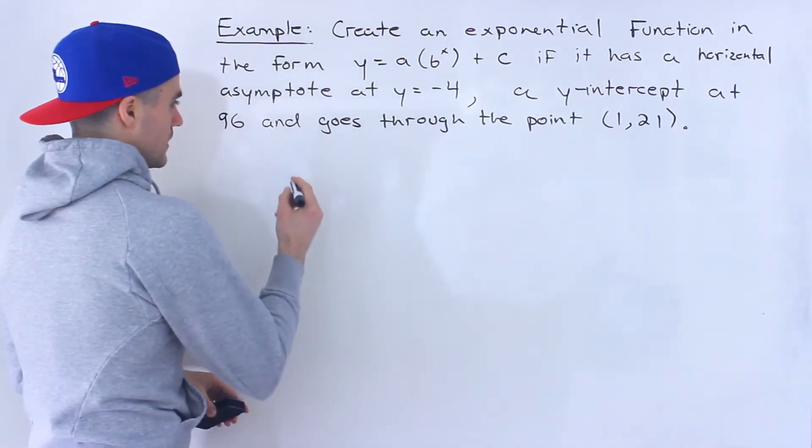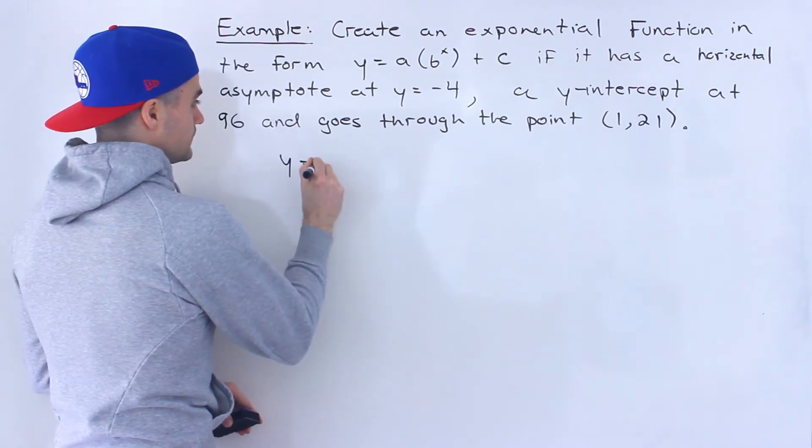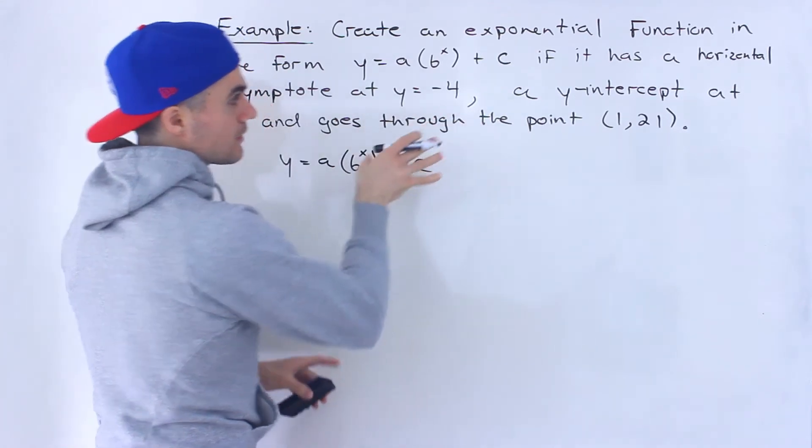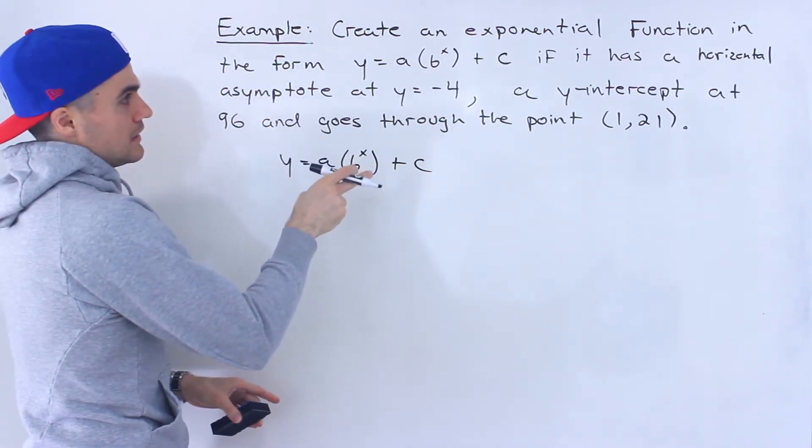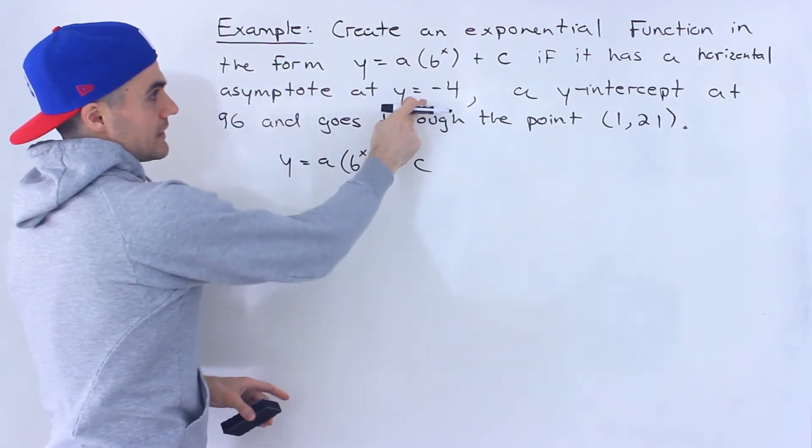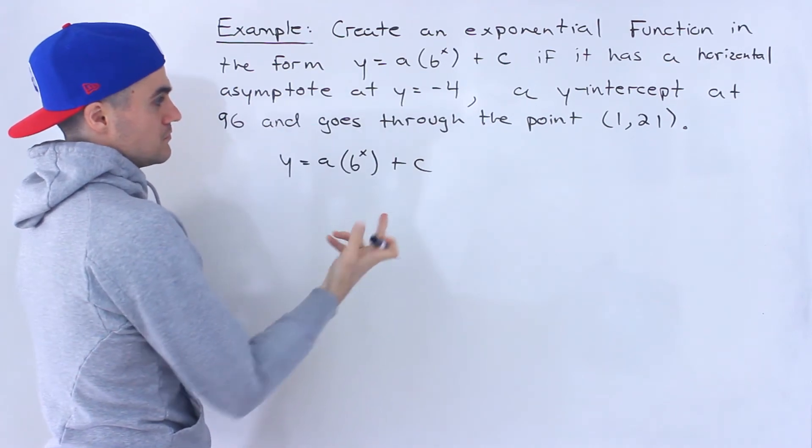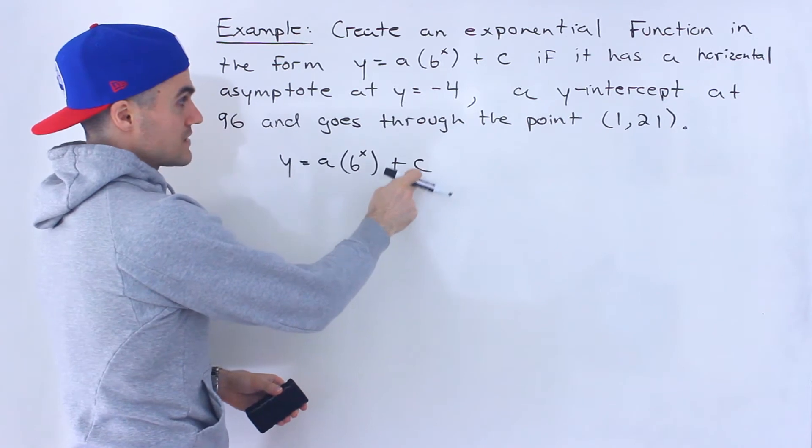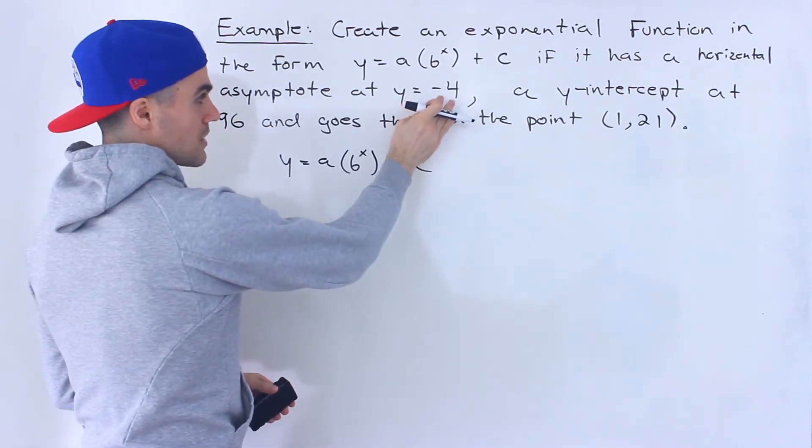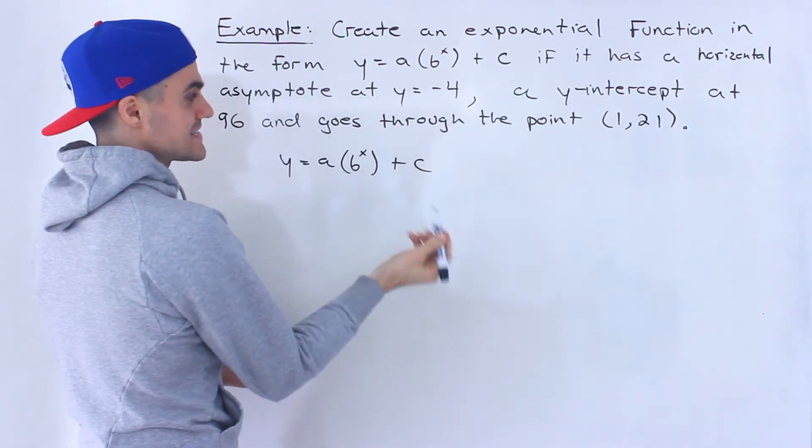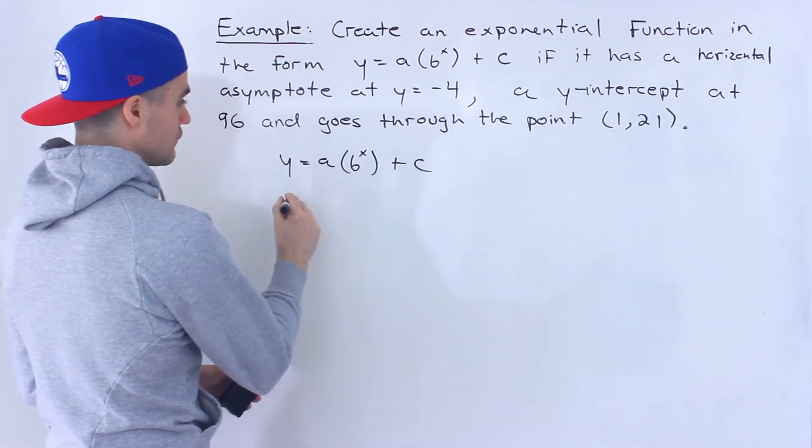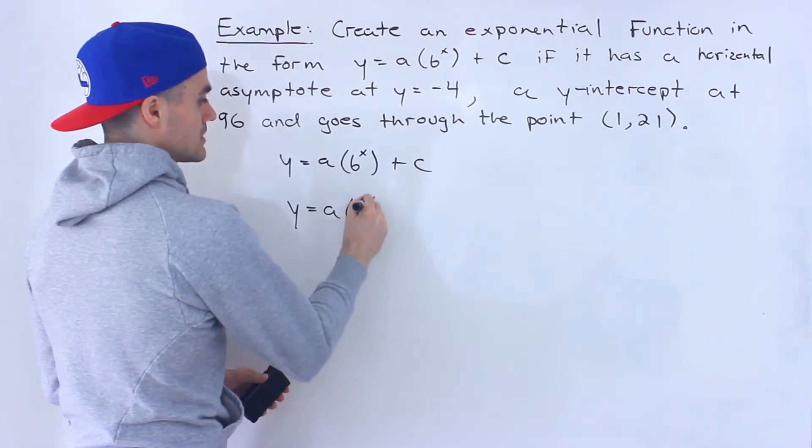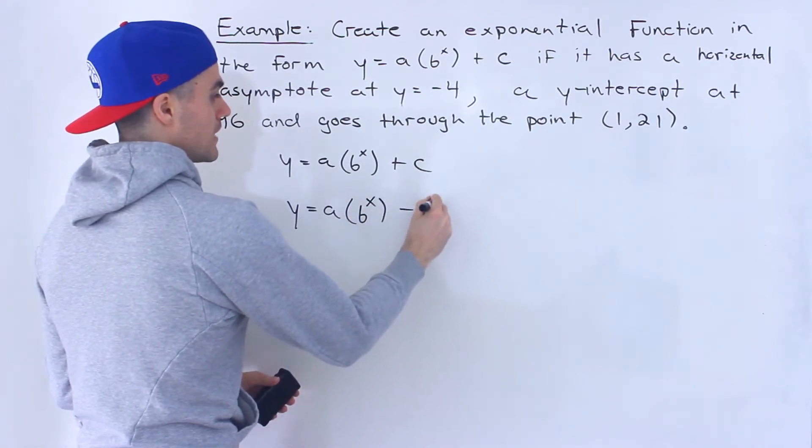So let's write out this general format here. Out of the three characteristics that we're given, the easiest one to deal with is the horizontal asymptote because that's always going to be the c value. Notice that if the horizontal asymptote is y equals negative 4, then c is equal to negative 4. So we can rewrite this as y equals a times b to the power of x minus 4.